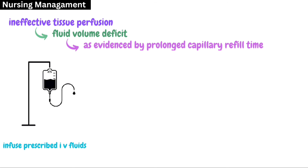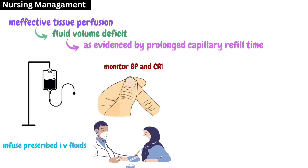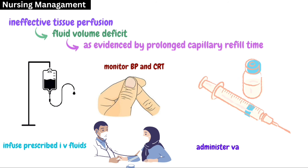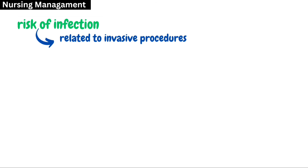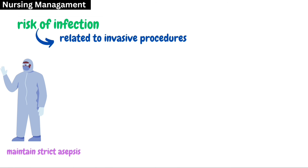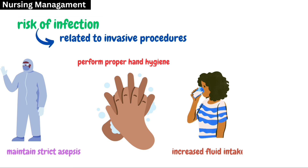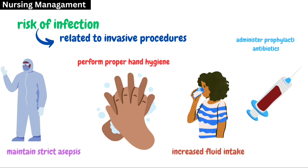The second nursing diagnosis is ineffective tissue perfusion related to fluid volume deficit, as evidenced by prolonged capillary refill time. Interventions include infusing prescribed IV fluids, monitoring blood pressure and capillary refill time frequently, and administering vasopressor agents if needed. The third nursing diagnosis is risk of infection related to invasive procedures; interventions include maintaining strict asepsis, performing proper hand hygiene, encouraging increased fluid intake, and administering prophylactic antibiotics if prescribed. Thank you for watching — that was all about postpartum hemorrhage.